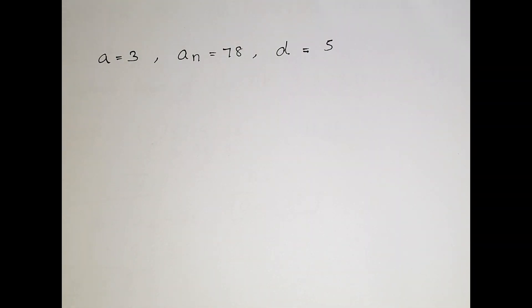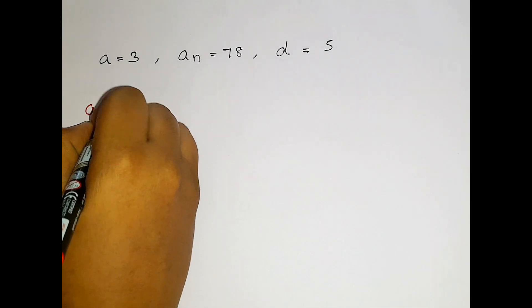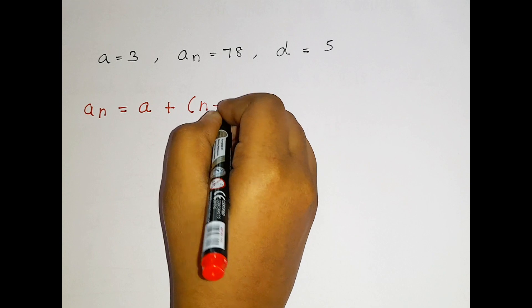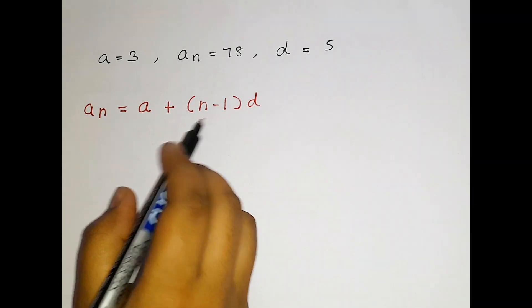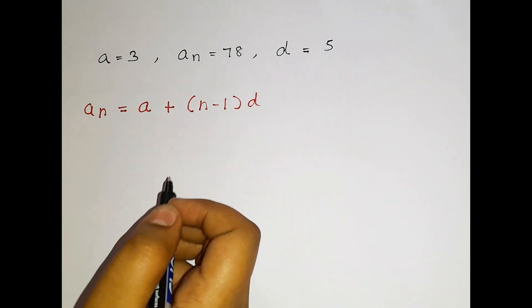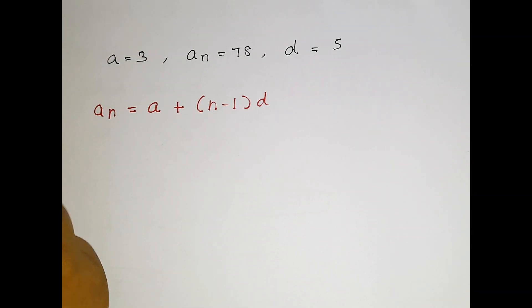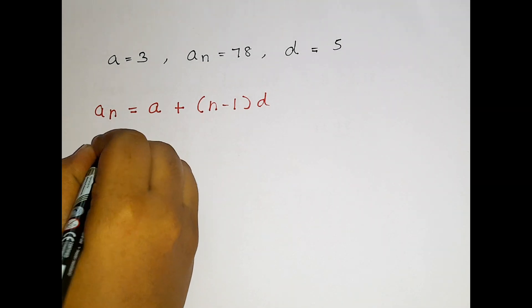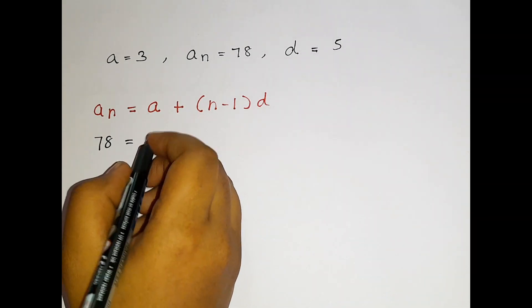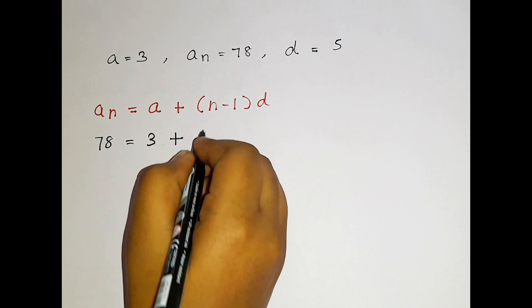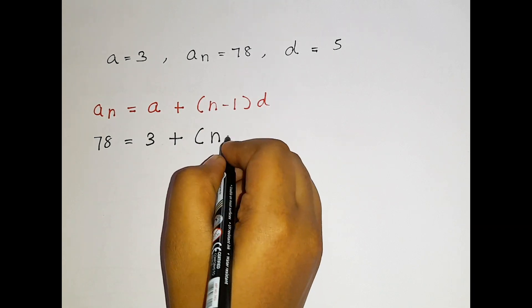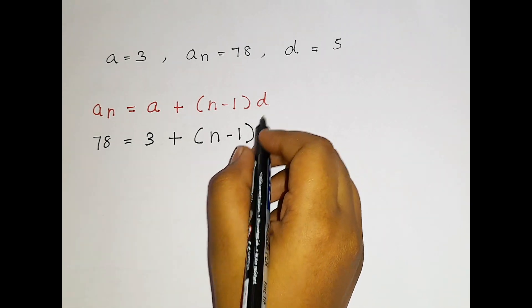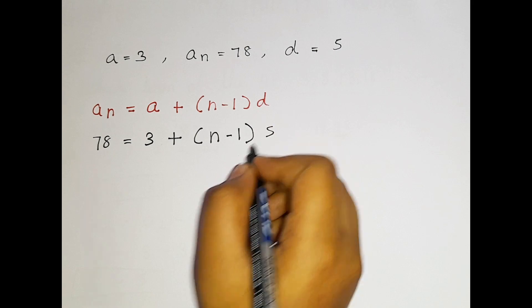Let us apply the formula. The formula is an is equal to a plus n minus 1 into d. Bracket means multiplication. Now let us substitute the values. What is an value? an is 78. Let us write 78 is equal to what is a? a is 3 plus, we do not know the n. So n is in question mark. Let us write them as it is n minus 1 and then bracket d, what is d? 5.